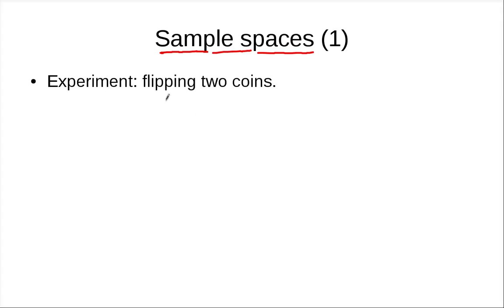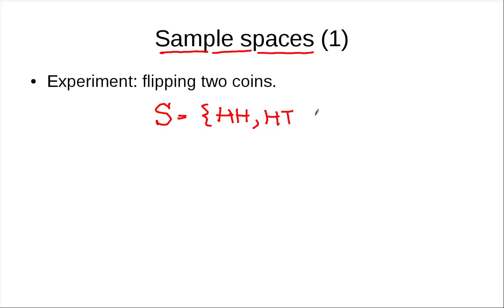For example, if our experiment is flipping two coins, the sample space S is equal to: you might get two heads, then head and tail, tail and head, or both tails. So this is the sample space for this experiment.